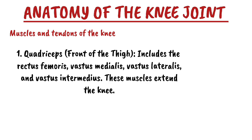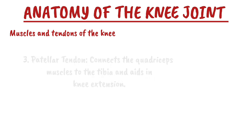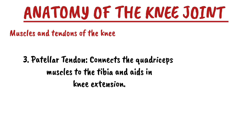The second grouping is the hamstrings, which are at the back of the thigh. They include the biceps femoris, the semitendinosus, and the semimembranosus. These muscles flex the knee and also assist in rotation of the knee. The third group is the patellar tendon, which connects the quadriceps muscles to the tibia and aids knee extension.